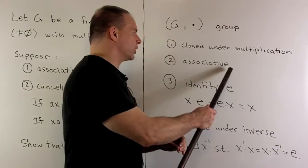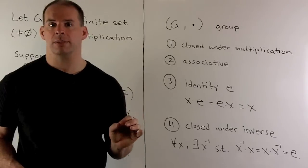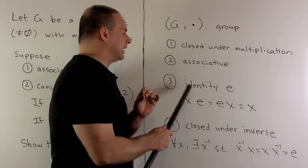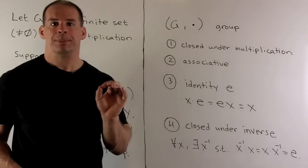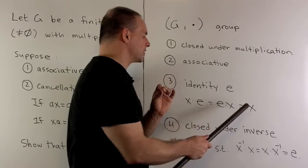We want the multiplication to be associative. And again, we get that for free as an assumption. We want to find an identity element E, such that if we take any X and G, we have X times E equals E times X equals X itself.